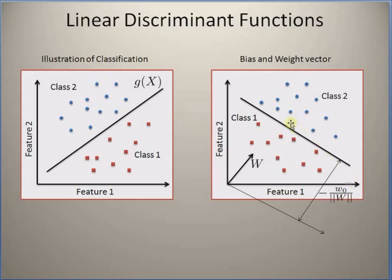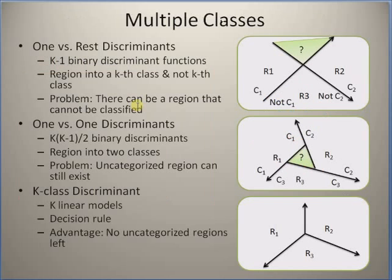Moving to linear discrimination for multiple classes, there are three types of discriminant functions. The first is one-versus-rest, where you use k minus one binary discriminant functions. Each discriminant function divides the region into class c_k or not class c_k.